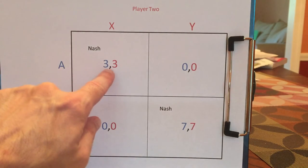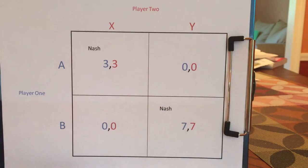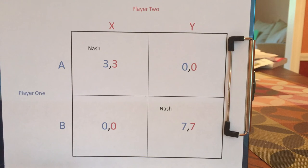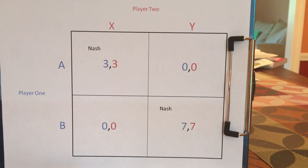So I know you're thinking: but wait, if they ended up here, they would regret not being at the other outcome. This gets to a fundamental issue of what a Nash Equilibrium is and what it means to regret. In a Nash Equilibrium, you only regret based on what you do — you only regret not having done something else yourself. You treat what the other person does as fixed and unalterable.